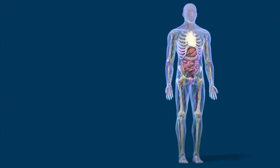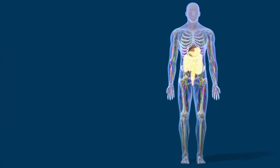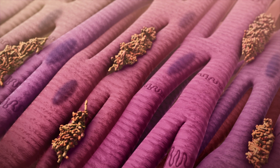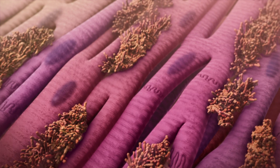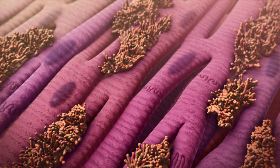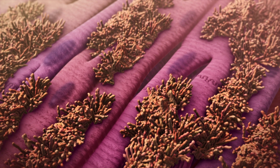These fibrils deposit as amyloid in various tissues and organs, including the kidneys, heart, nervous system, liver, and digestive system. As the amyloid builds up, it starts to disrupt the function of affected organs and cause symptoms.